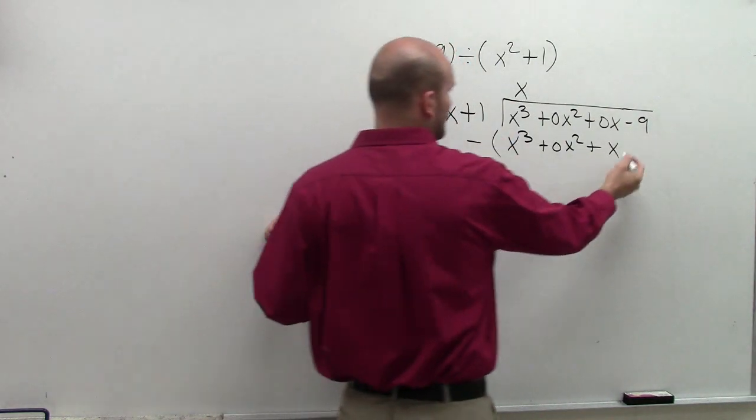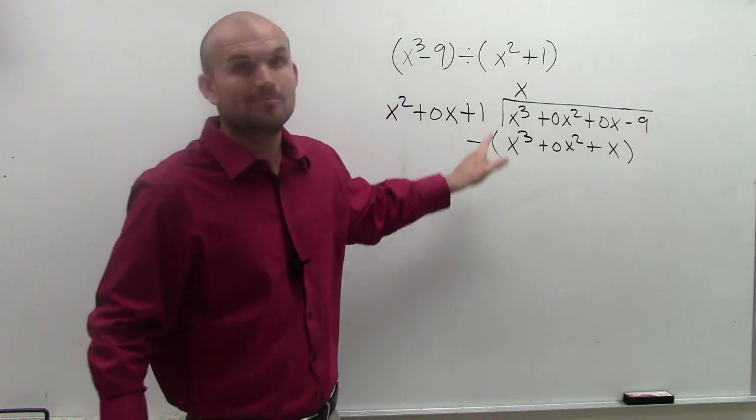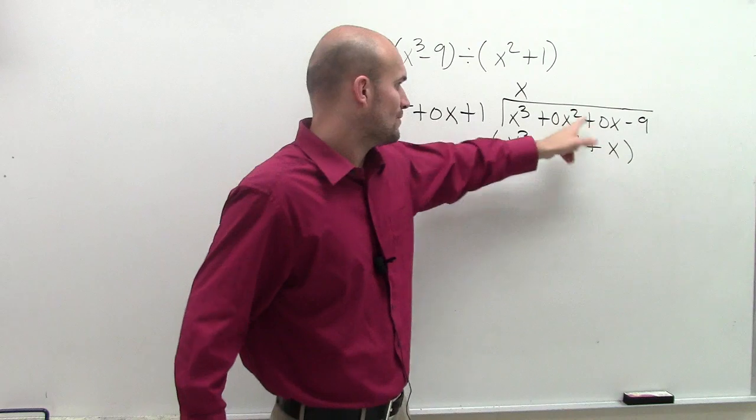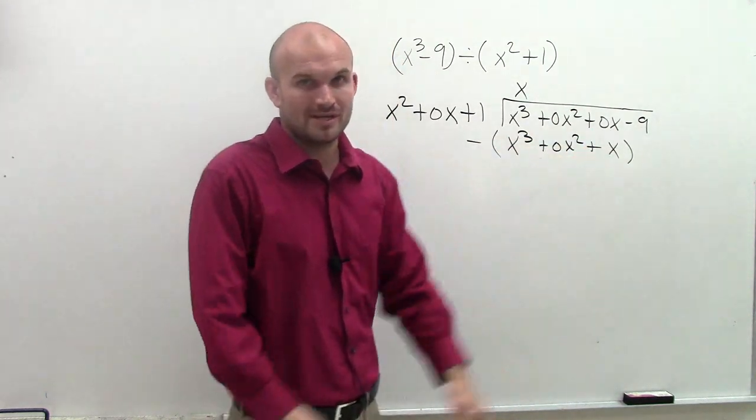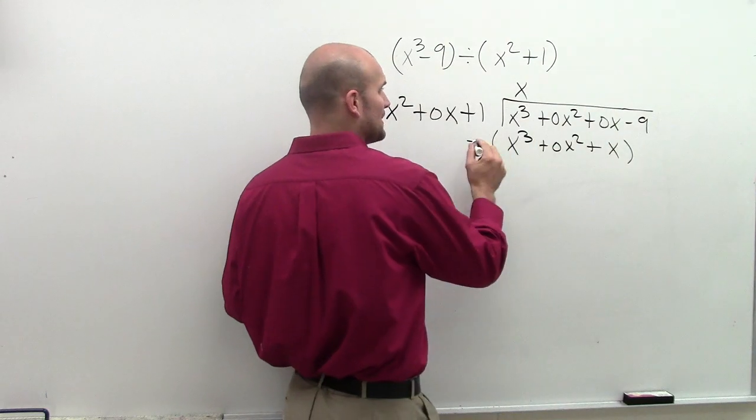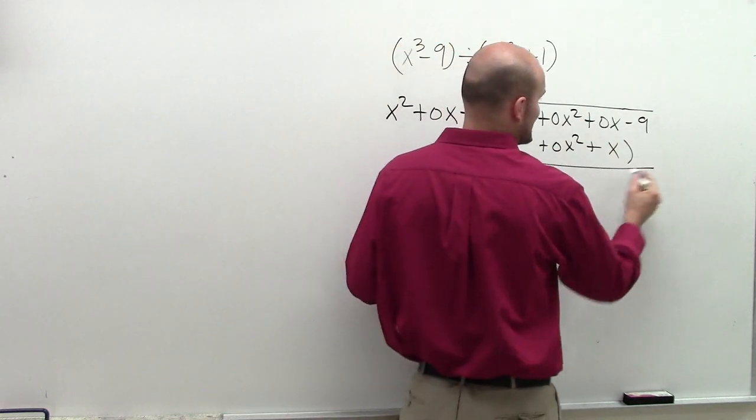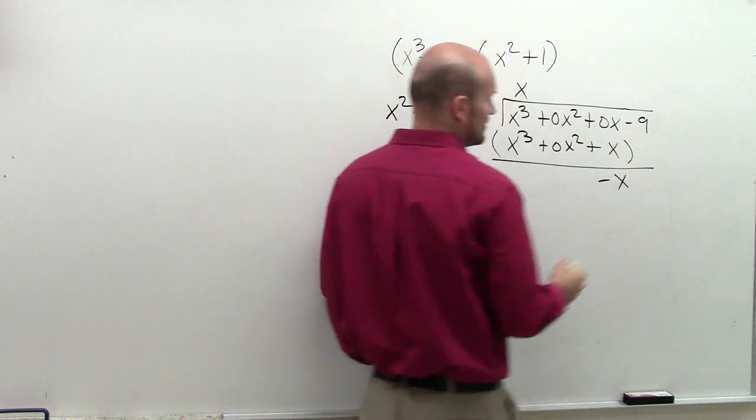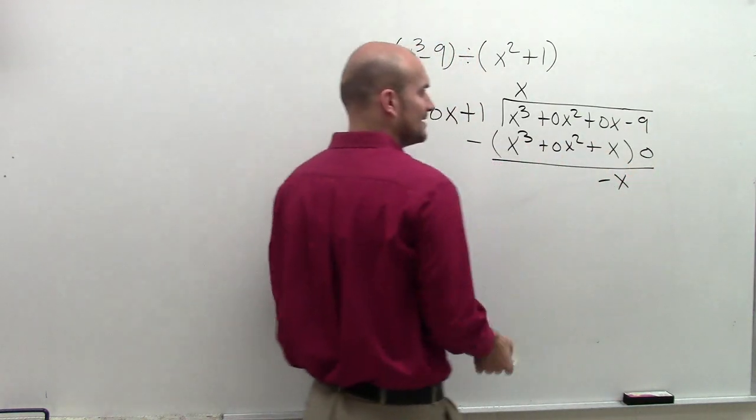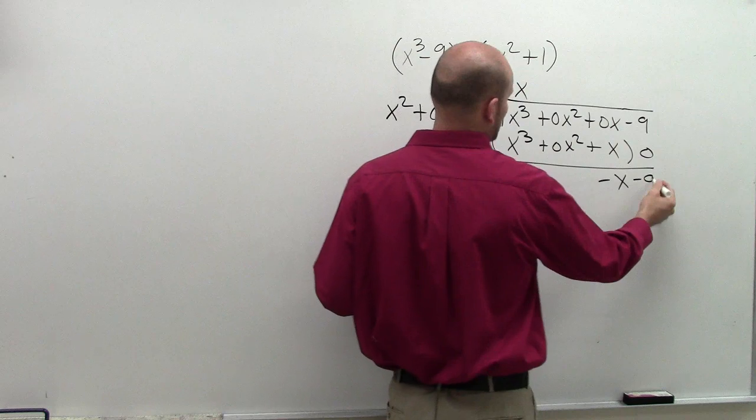So x cubed minus x cubed is 0x cubed. I don't need to write it. 0x squared minus 0x squared is 0x squared. I don't need to write it. 0x minus x is negative x. And then negative 9 minus 0 is going to be negative 9.